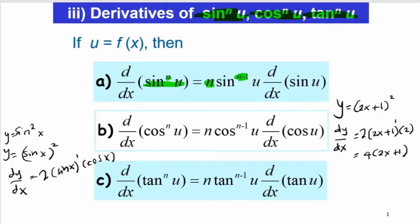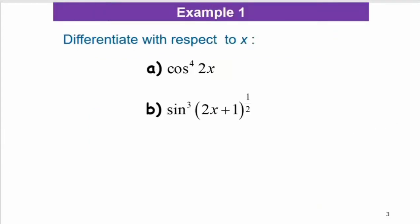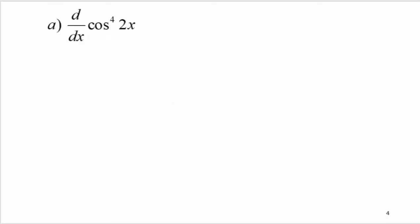Now let's look at a few examples. For question a, we differentiate cos⁴(2x) with respect to x. This can be rewritten as differentiating (cos 2x)⁴. It means the same thing whether we put the power 4 in the middle or at the end of cos 2x.